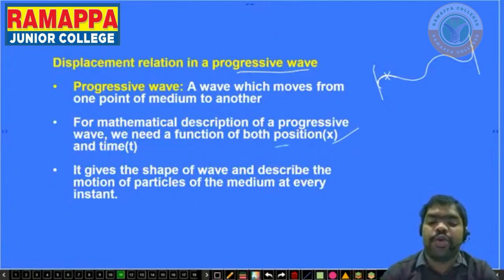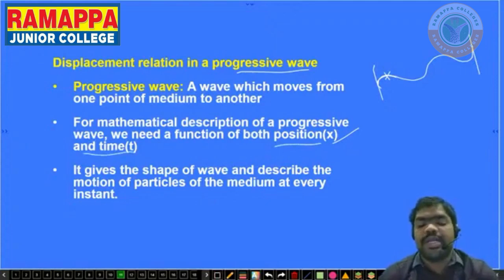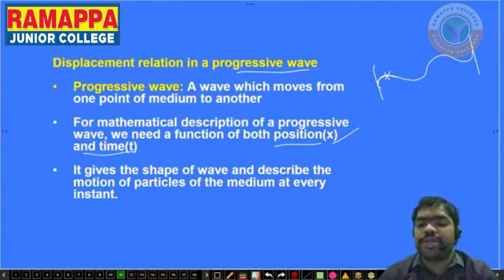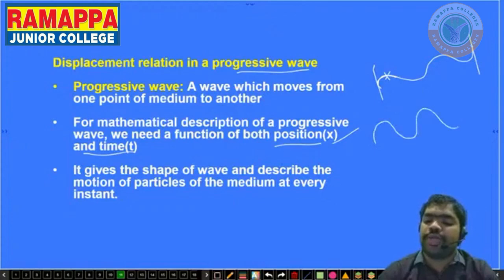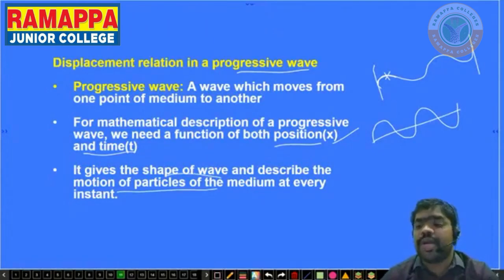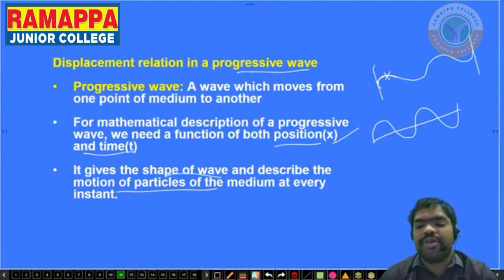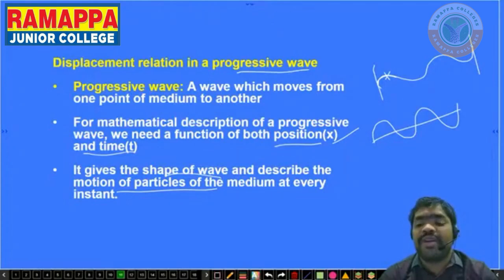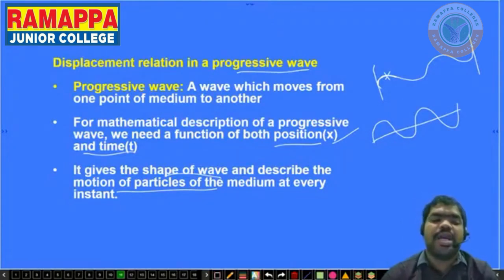For the mathematical description of a progressive wave, we need a function of both position and time — the particle's position as well as time. The displacement relation gives the shape of the wave and also describes the motion of the particles.